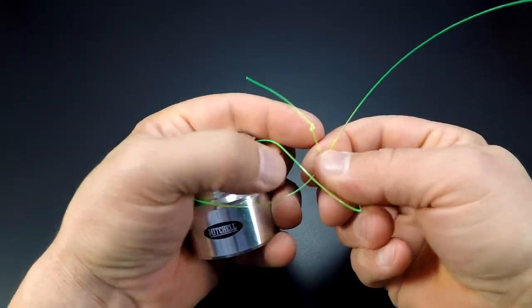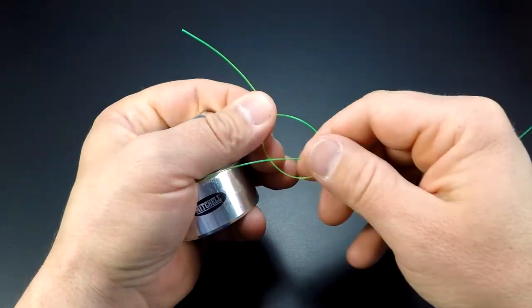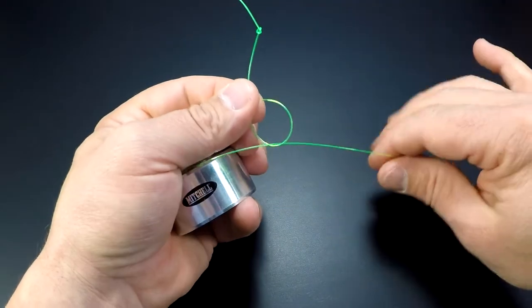Take the tag with the overhand knot, cross over your main line, and go around making a loop.